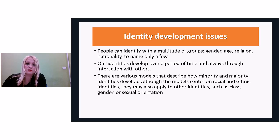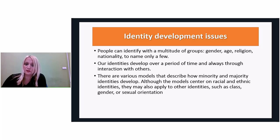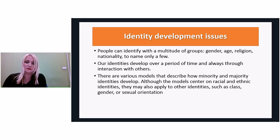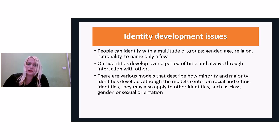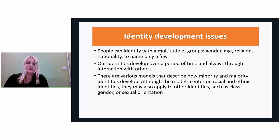In the second stage we have conformity, characterized by internalization of the values and norms of the dominant group and a strong desire to assimilate into the dominant culture. Individuals at this stage might have negative attitudes toward both themselves and their group. For example, one young Jewish woman said: 'I tried very hard in high school to not let anyone know I was Jewish. I would talk about Christmas shopping and parties with my friends, even though my parents didn't allow me to participate in Christmas celebrations at all.'